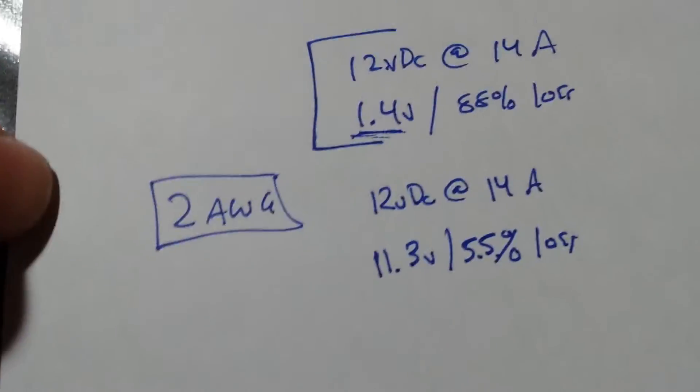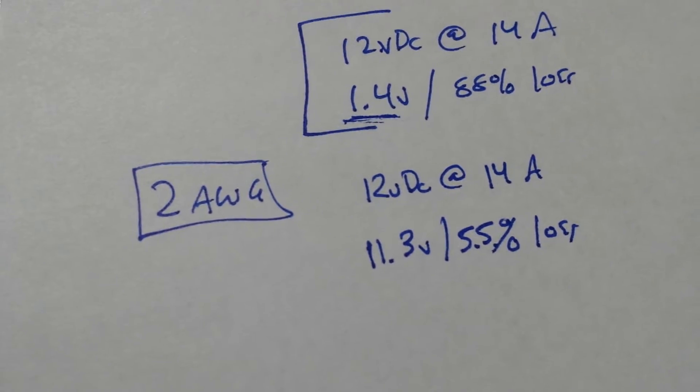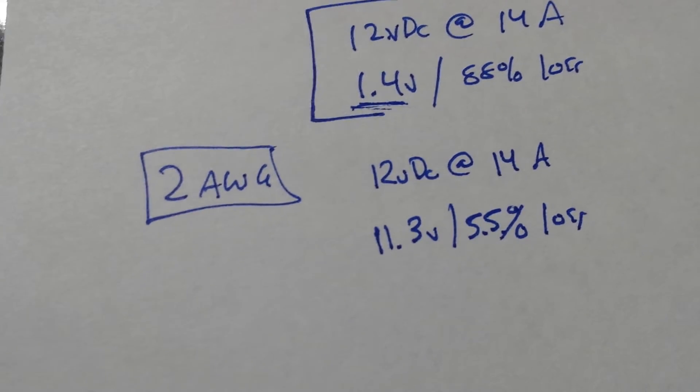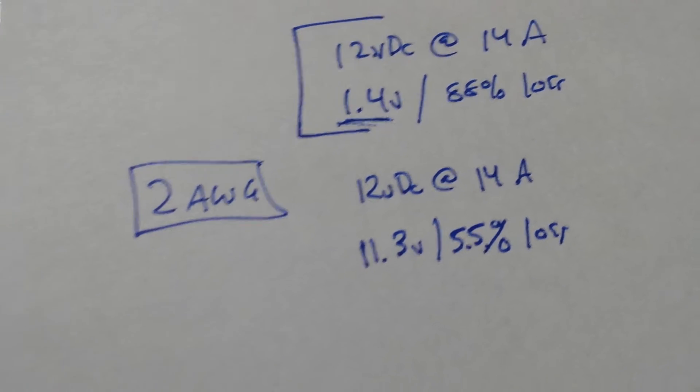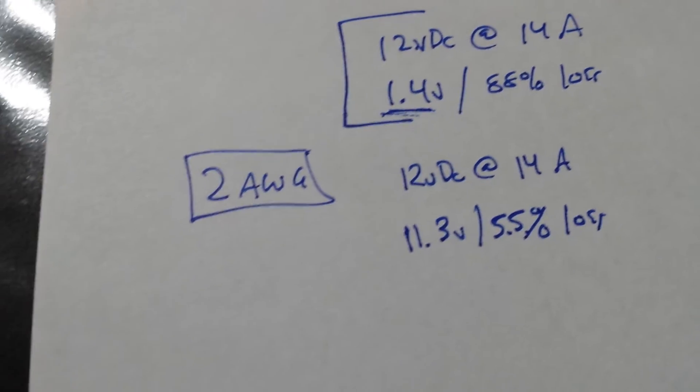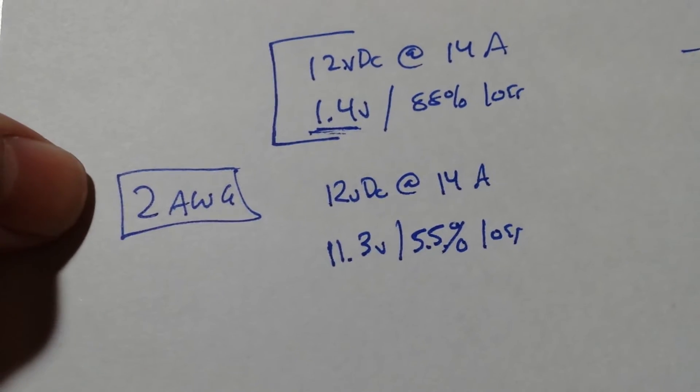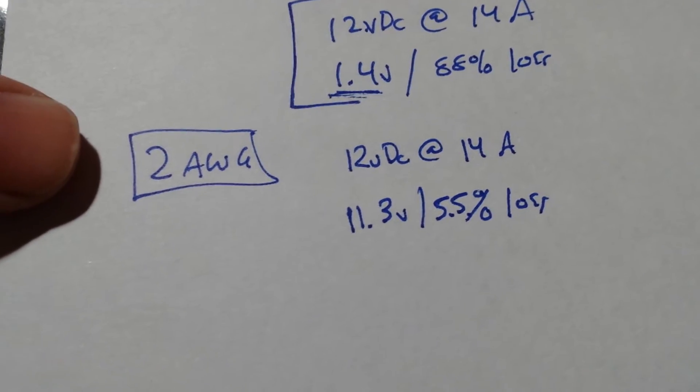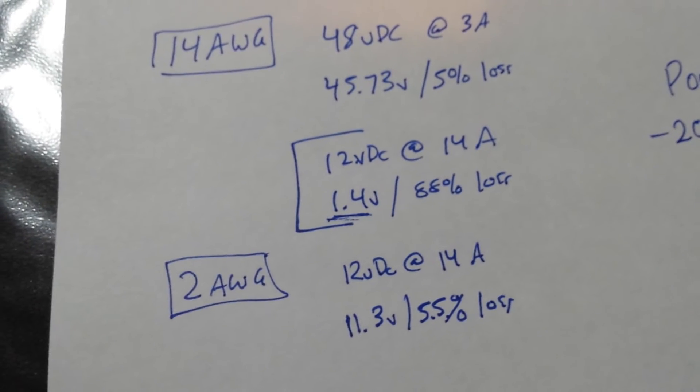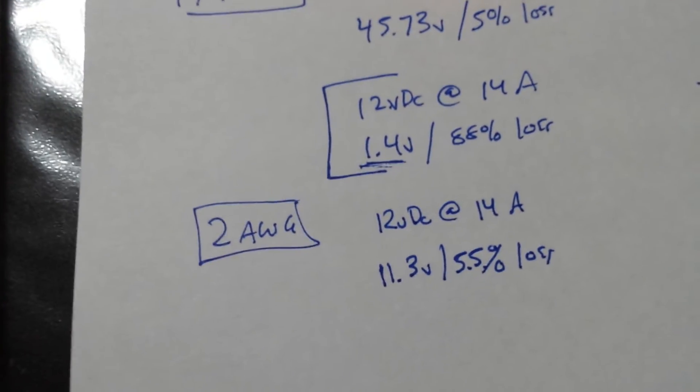So to properly do this, you would need 2 gauge wire or as best I guess. So at 12 volts at 14 amps, at the other end of that tether, you get 11.3 volts, which is only a 5.5% loss. That's a little bit better, but 2 gauge wire is massive wire, expensive, probably not very flexible, and it's not going to be very buoyant at all with all that copper in it. So, that wouldn't work out very well.